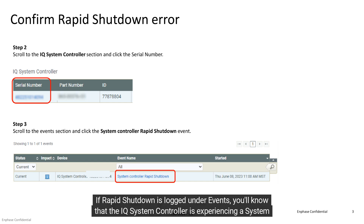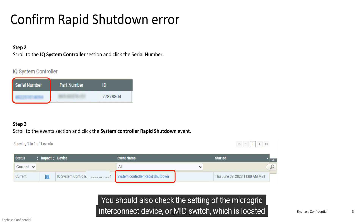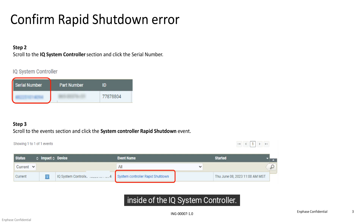If rapid shutdown is logged under events, you'll know that the IQ System Controller is experiencing a system shutdown error. You should also check the setting of the microgrid interconnect device, or MID switch, which is located inside of the IQ System Controller.